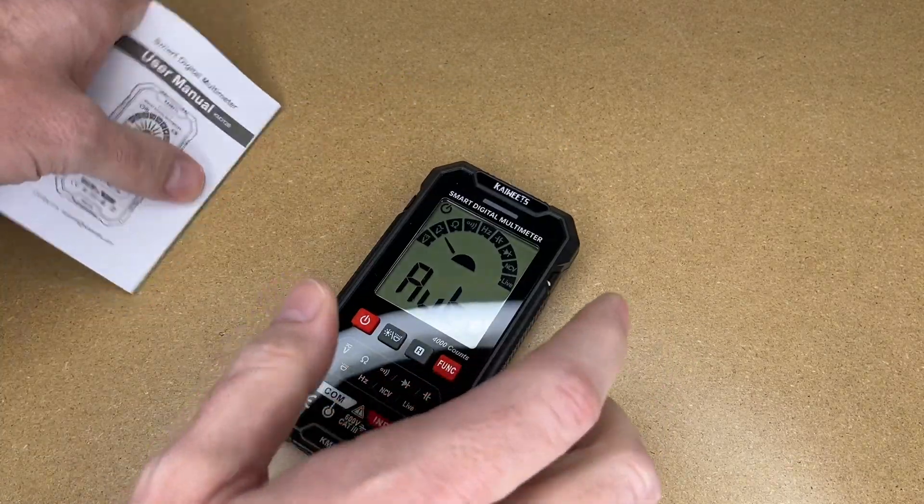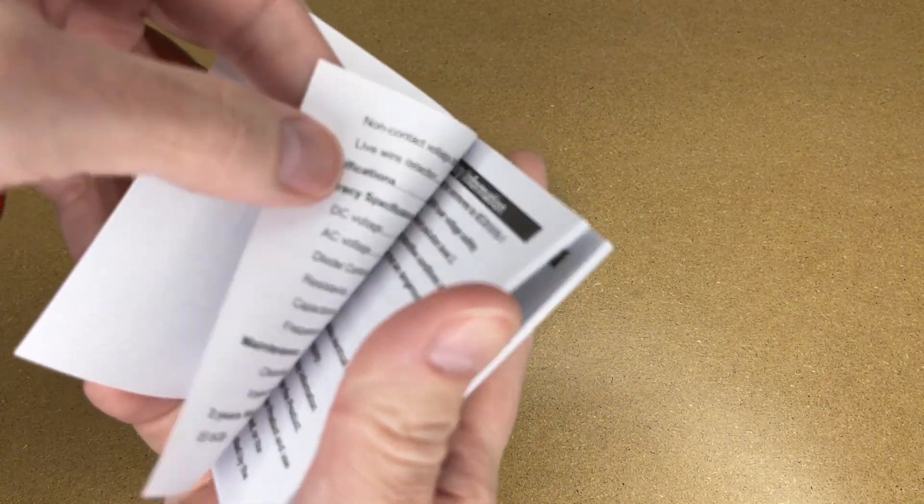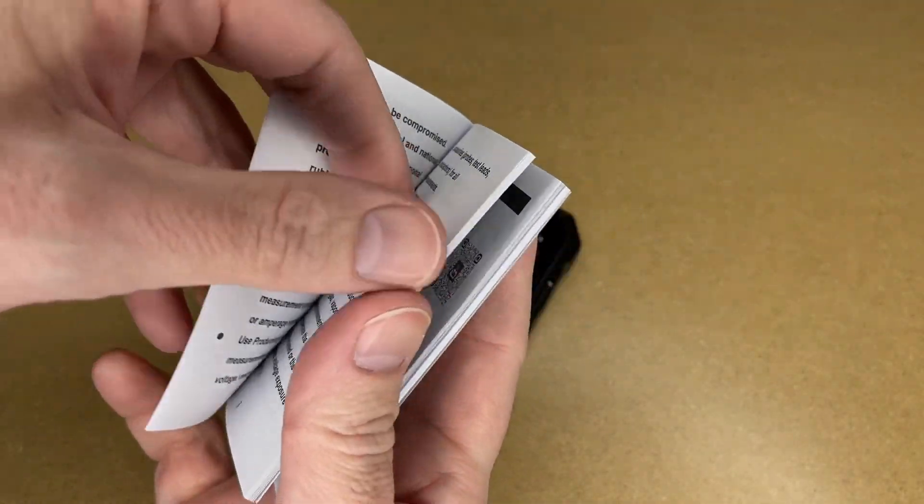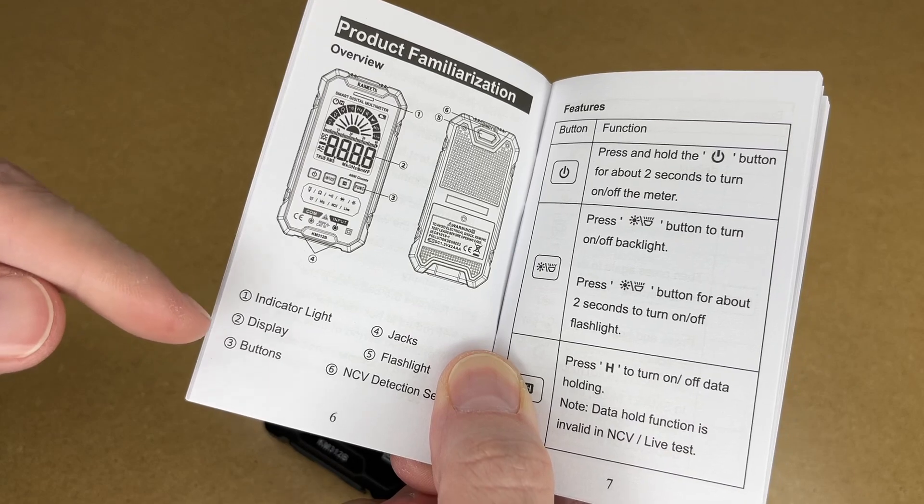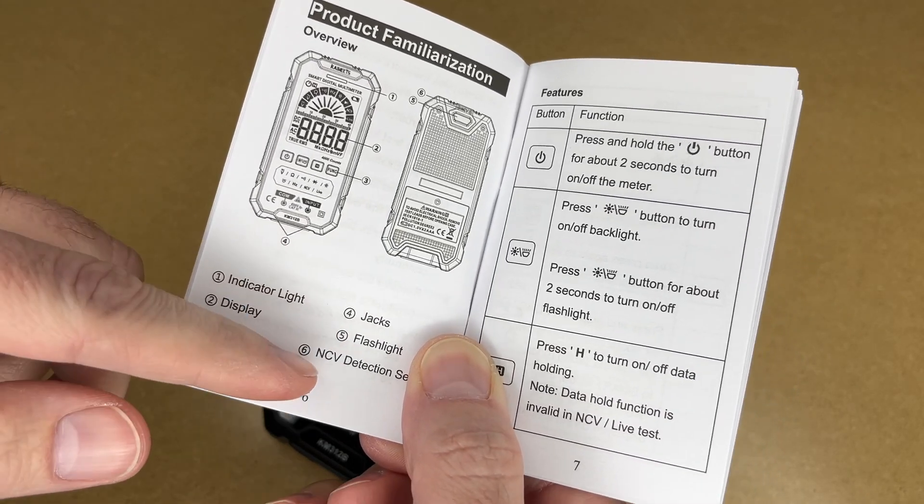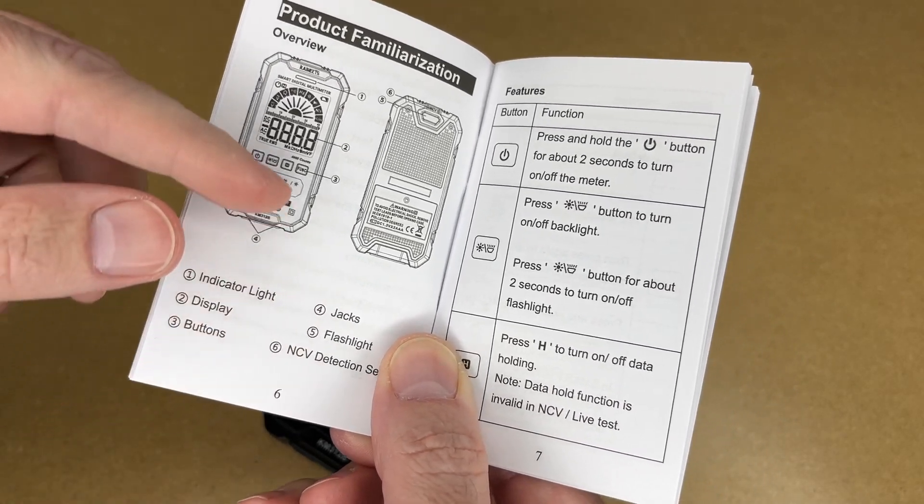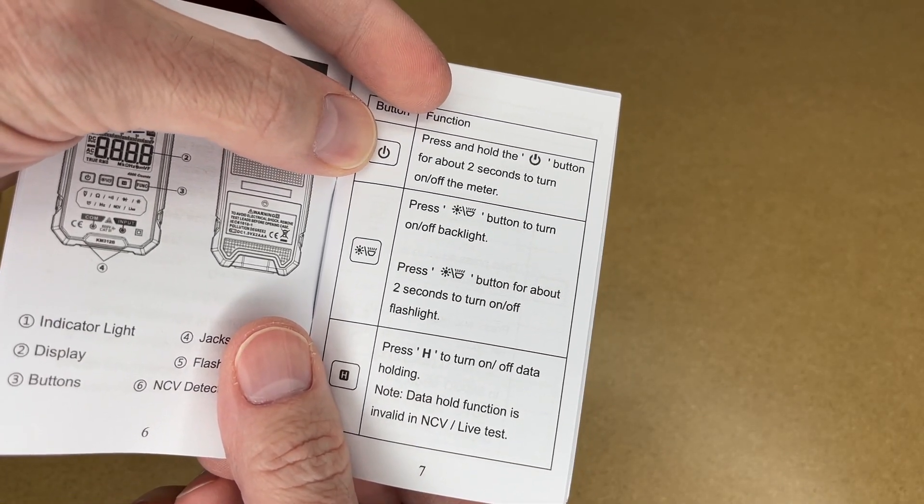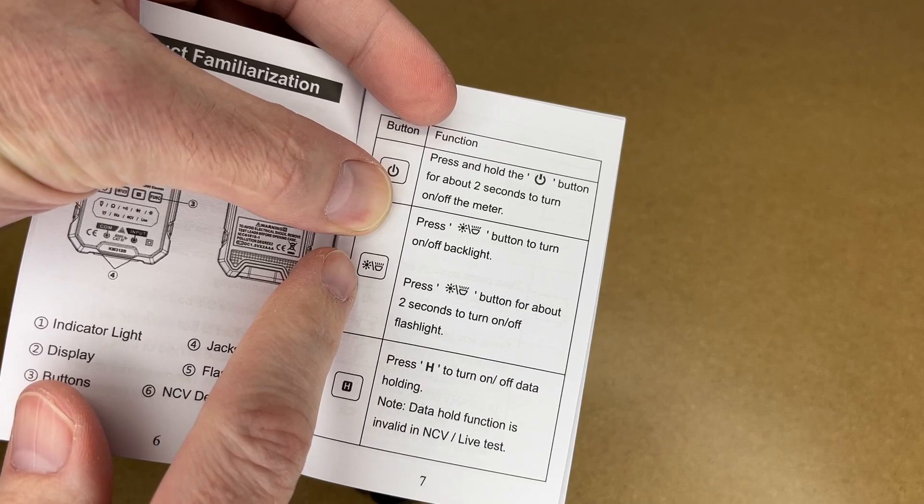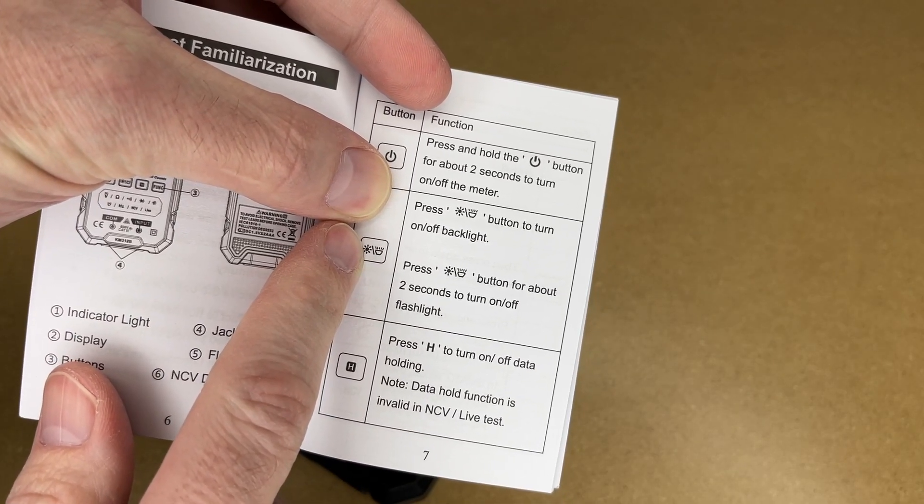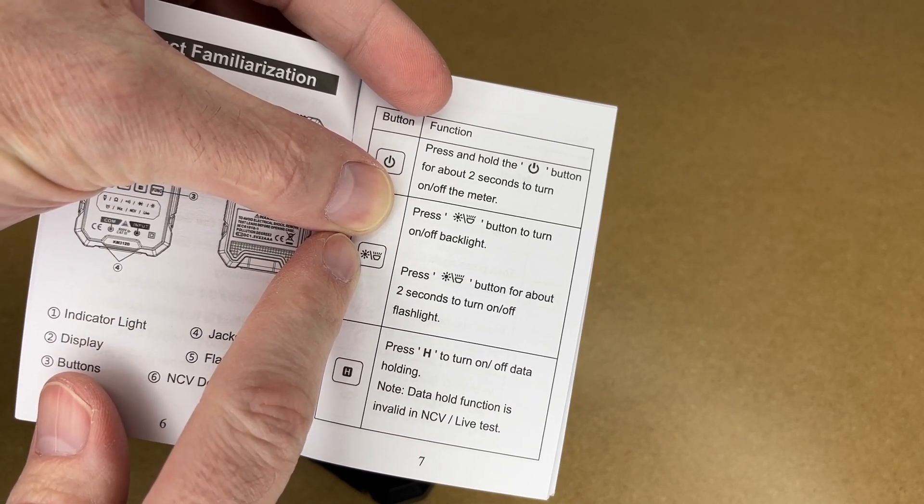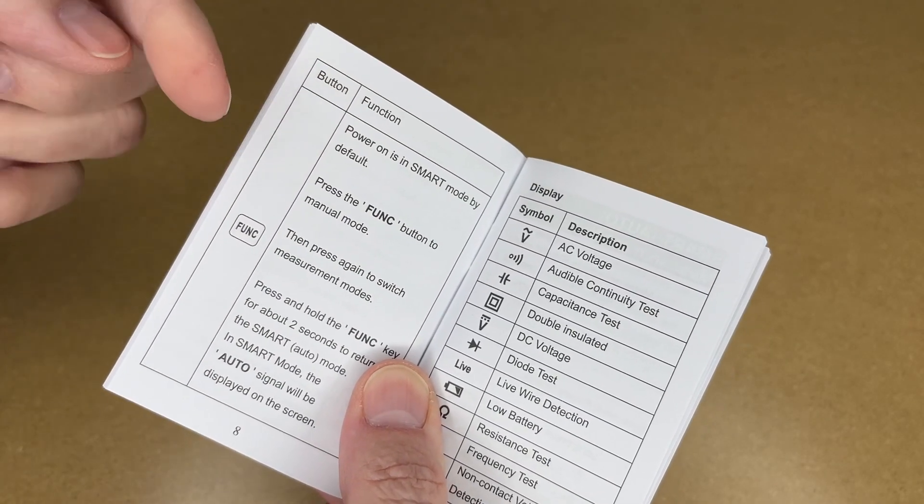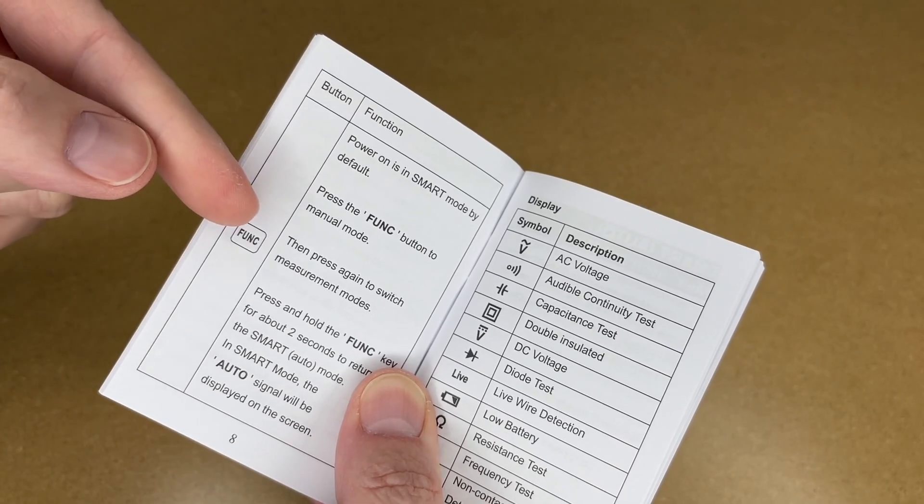Let's take a quick look at the manual. There is safety information, so you do want to read through this manual and make sure you follow the safety instructions. Here are the different parts: indicator light, display, buttons, jacks, flashlight, and the non-contact voltage detection sensor. Here's the different buttons: to turn it on or off you hold down power for two seconds. This has an LCD display that has a backlight, so you can press the light button to turn that on or you can hold it down for two seconds to turn on the flashlight. It has a hold button and a function button. This has the smart mode but you can also go into manual mode, and this is also auto-ranging.